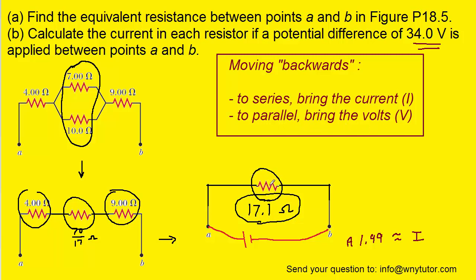So as an example of how these rules work, let's go to our simplified circuit, and let's move backwards to the so-called middle circuit. And we'll see that we're moving backwards to a series arrangement. And according to the rules, if we move backwards to a series arrangement, we're going to bring with us the current. So we're going to bring with us the 1.99 amps. That means that each of these resistors will have a current of 1.99 amps passing through them. So let's label that. Okay, so far so good.